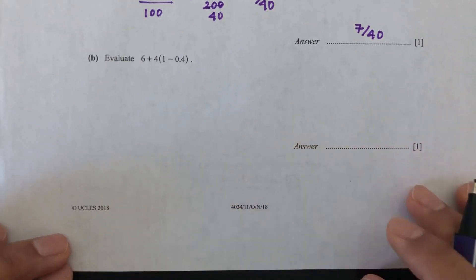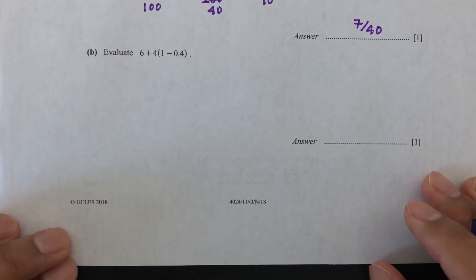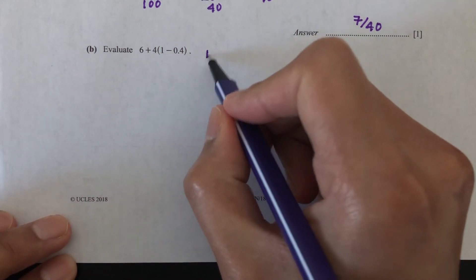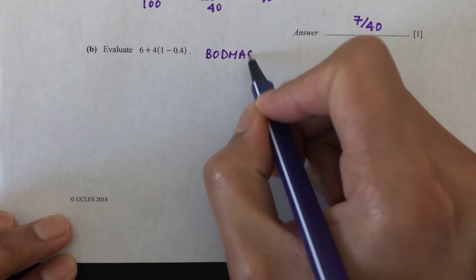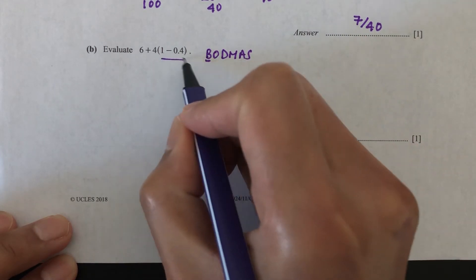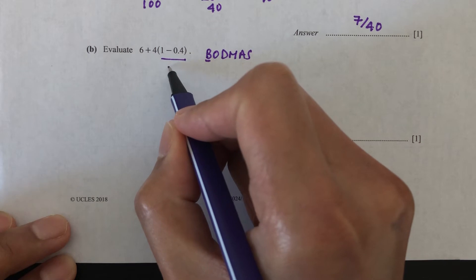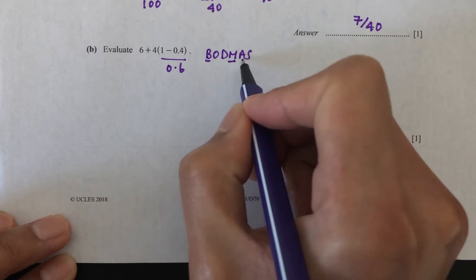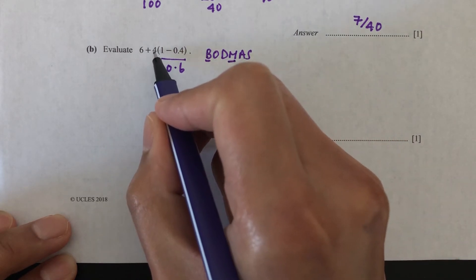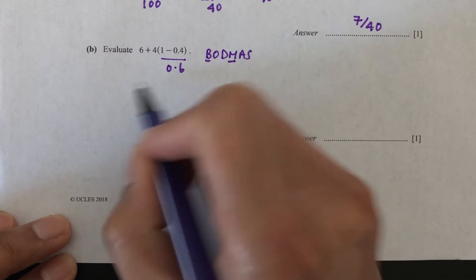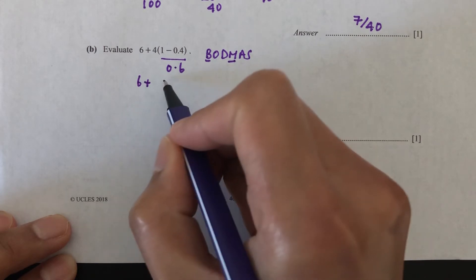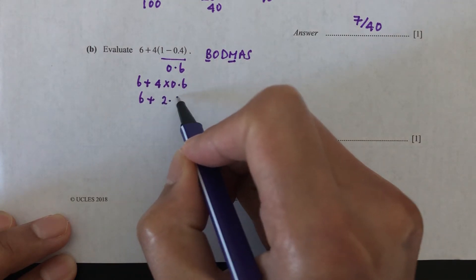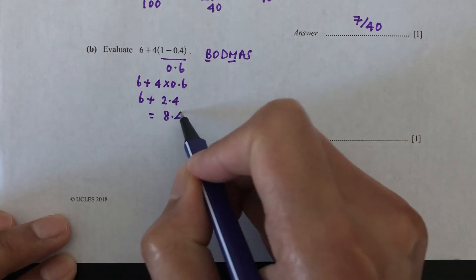Now moving on to part B: evaluate this operation. We have to follow BODMAS. First do the brackets: 1 minus 0.4 equals 0.6. Then we do multiplication before addition: 4 times 0.6. So 6 plus 4 times 0.6 — that will be 2.4 — equals 8.4. That is your answer.